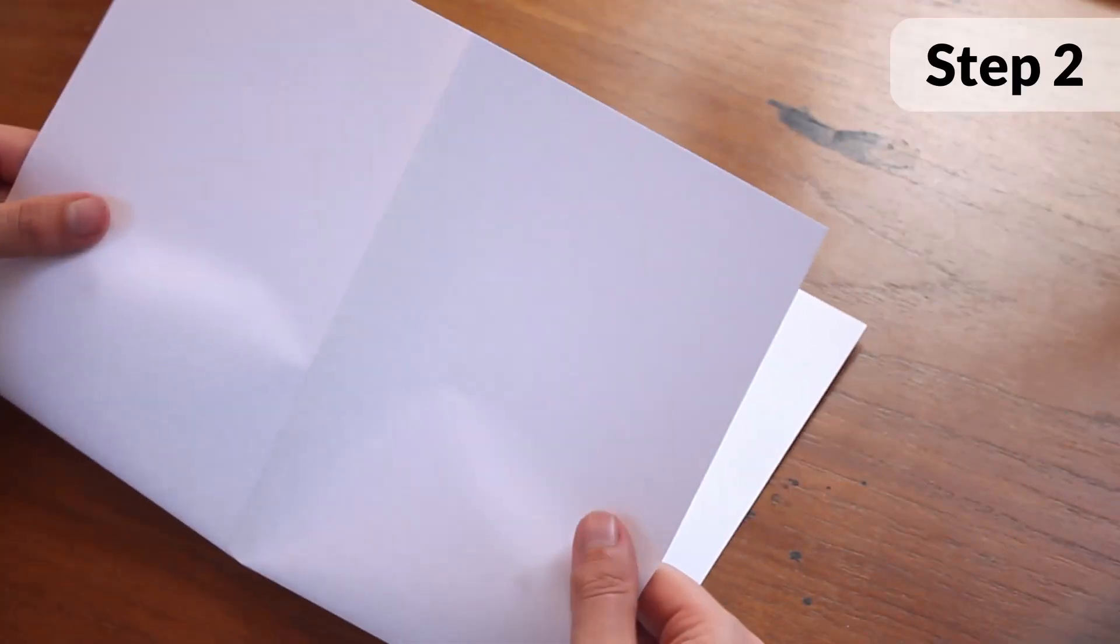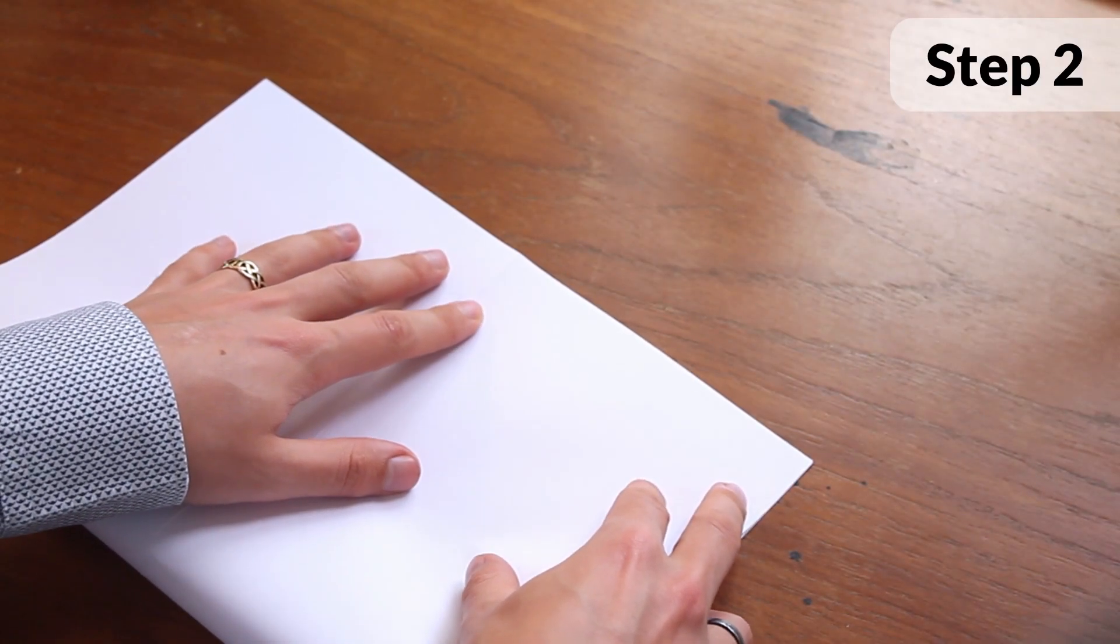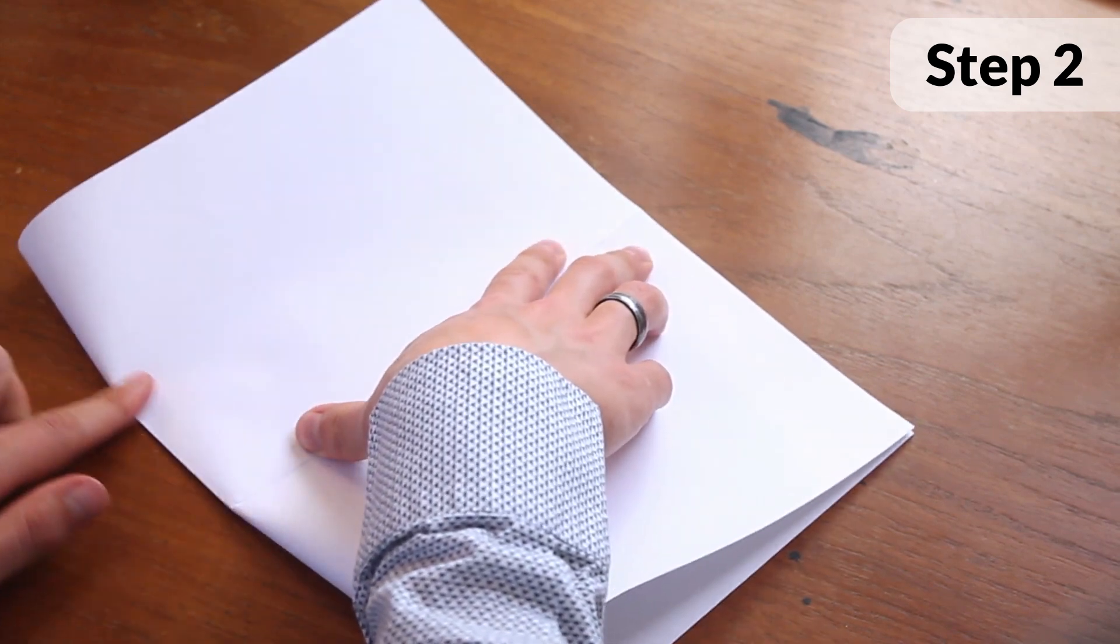Fold the paper in half widthwise so that it makes a short fat rectangle. This time keep it folded.